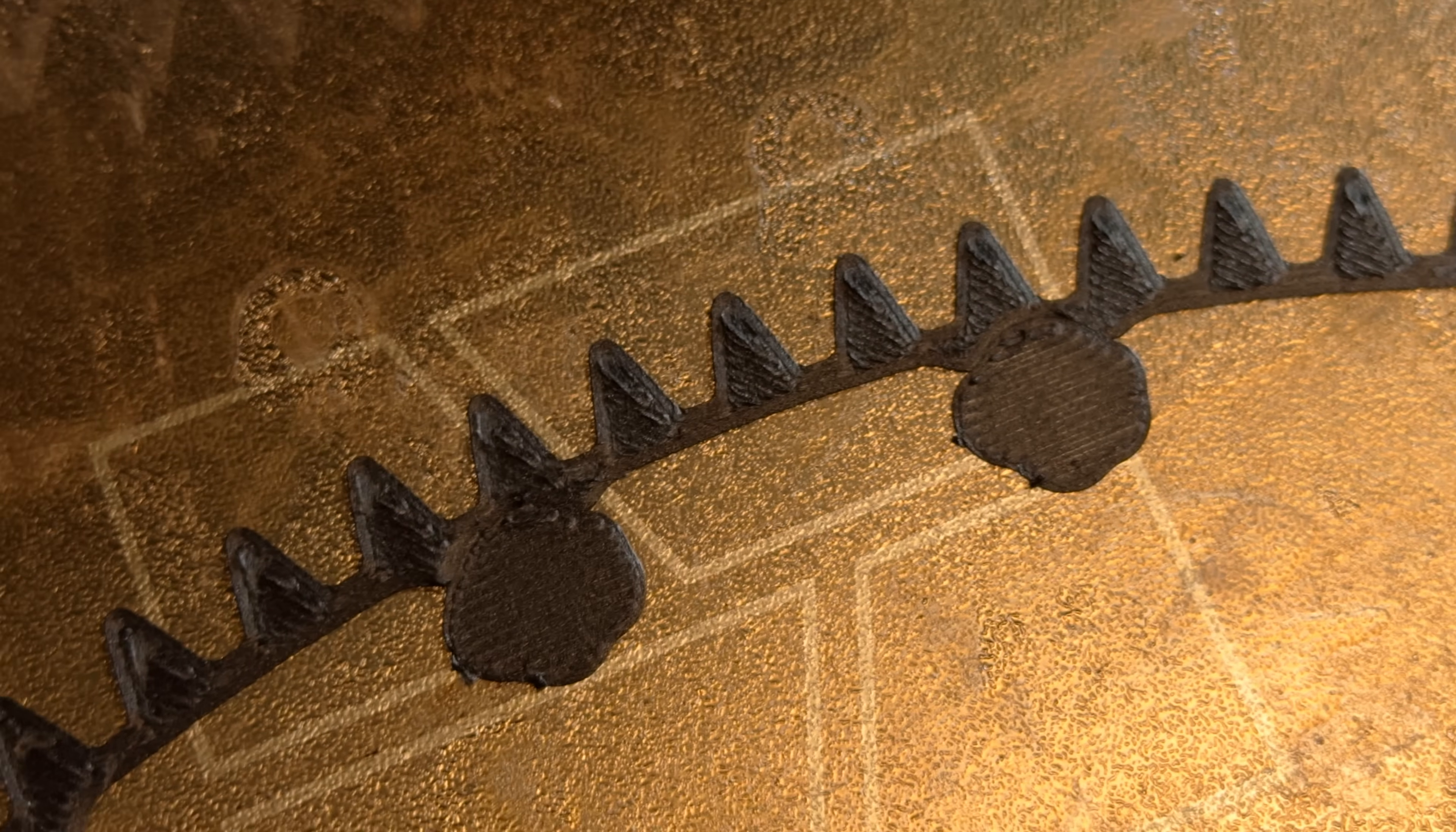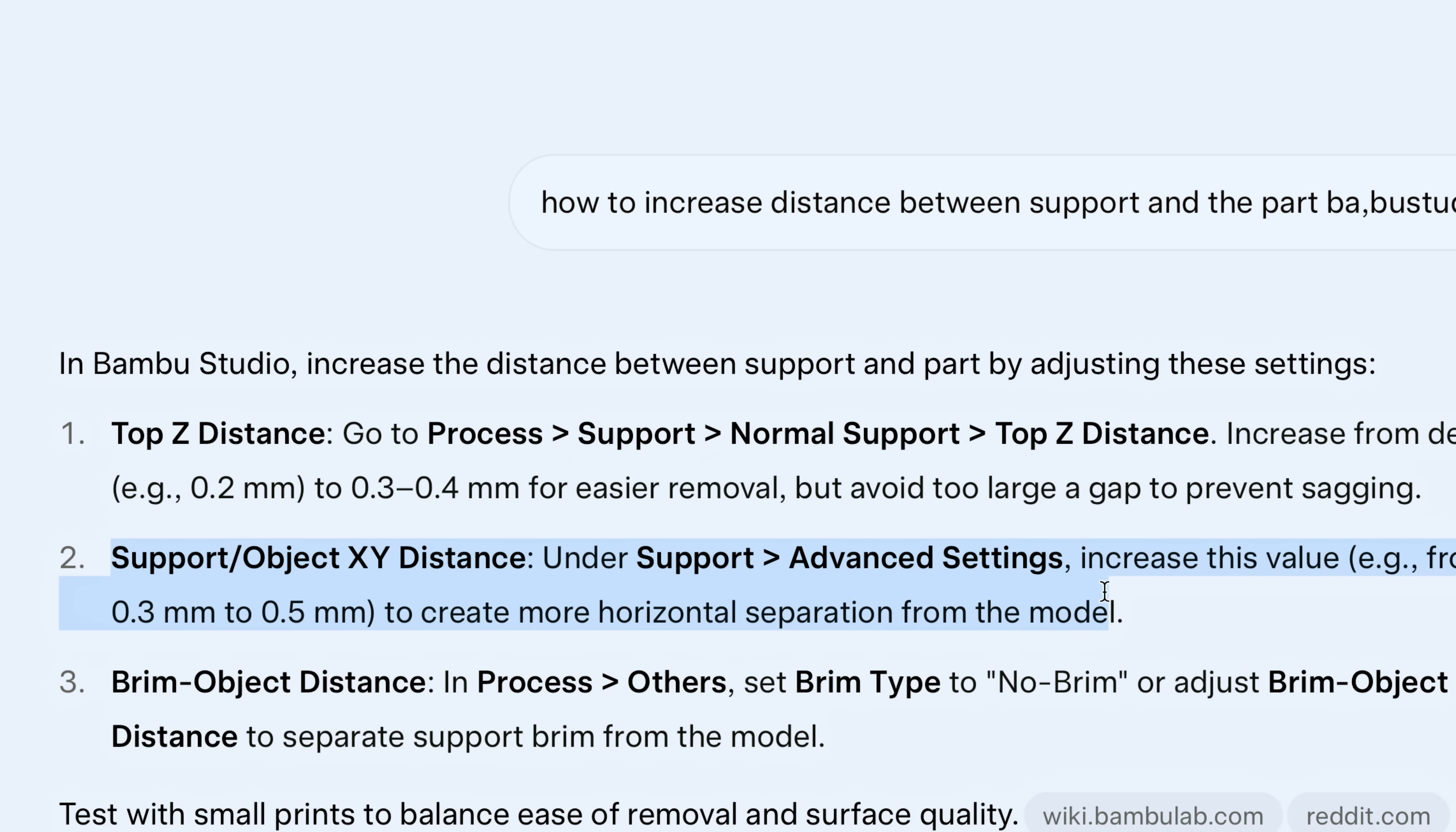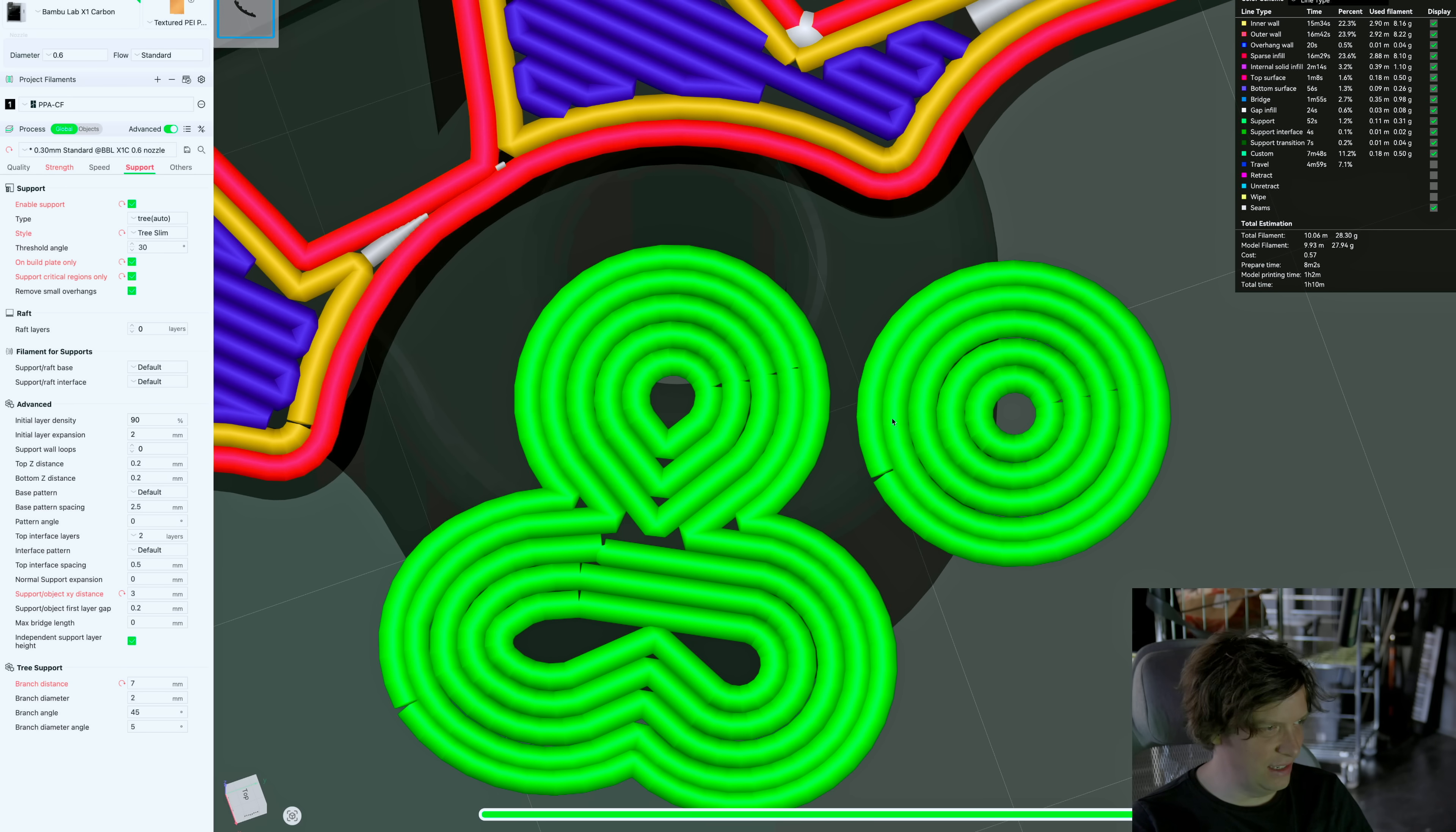This support is clearly going into the part and I don't think that's necessary. So let's see if we can withdraw the support. The green line is too close to the orange. Tree slim, yes! That's better. That looks easier to break off. Still there is one spot here where I think it's unnecessarily close to the base. So under support advanced there's a support object xy distance. One, three, yes! So now we can do the tree auto and we can do this tree slim. And now we fixed it. Now you see that the green things are not touching, they're three millimeters away.